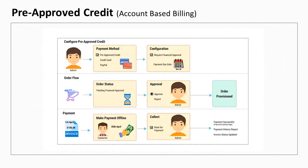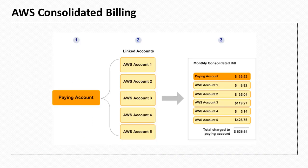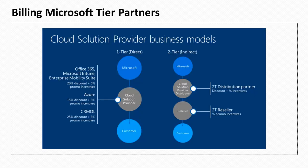Service providers can bill customers with a single invoice for all cloud transactions and collect payments. AWS partners can leverage the benefits of AWS consolidated billing within the family. Microsoft Tier 1 and Tier 2 partners can resell services to existing or new Microsoft tenants and use Microsoft Partner Center APIs and Graph APIs to provision and manage Microsoft CSP services.